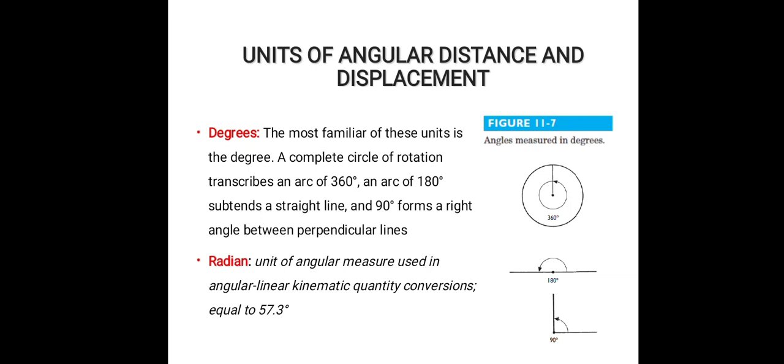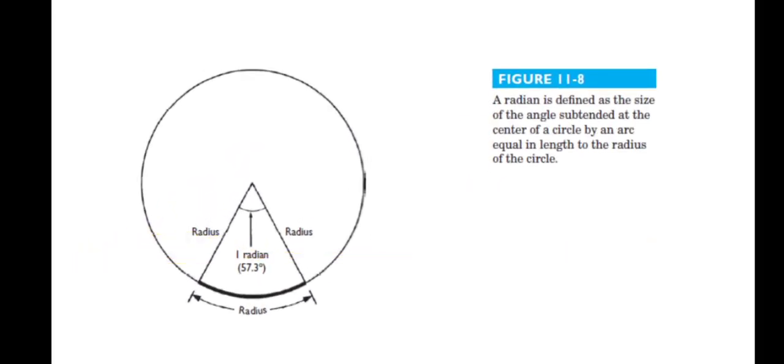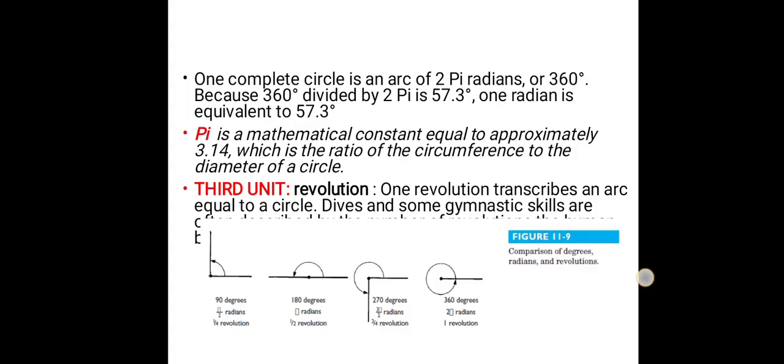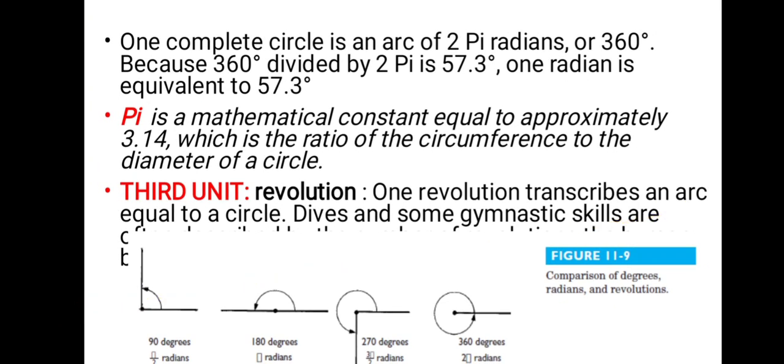The second unit is the radian, used in angular and linear kinematic quantities. One radian is equal to 57.3 degrees. The radian is defined as the size of the angle subtended at the center of a circle by an arc equal in length to the radius of the circle. One complete circle is an arc of 2π radians.